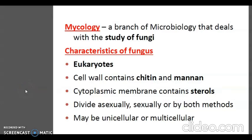Fungi are eukaryotic protists that differ from bacteria and other prokaryotes in many ways. They possess rigid cell walls containing chitin, mannan and other polysaccharides. The cytoplasmic membrane contains sterols. They possess true nuclei with nuclear membrane and paired chromosomes. They divide asexually, sexually or by both processes, and may be unicellular or multicellular.